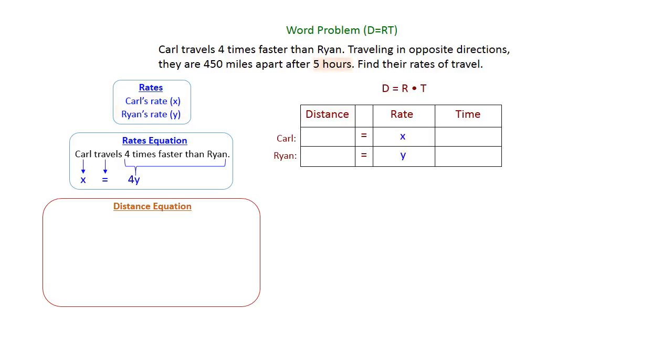Let's look at that traveling sentence again. We know they were both traveling for five hours, so you can put a 5 for time for both Carl and Ryan. As far as their individual distances go, we don't know that, but we can do distance equals rate times time. So in the table, you can just multiply 5X for Carl's distance and 5Y for Ryan's distance.